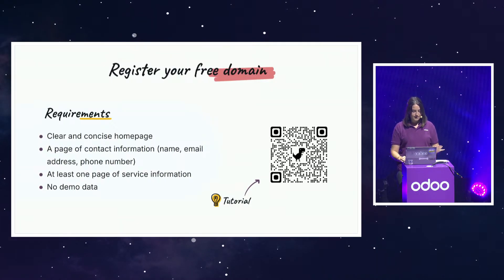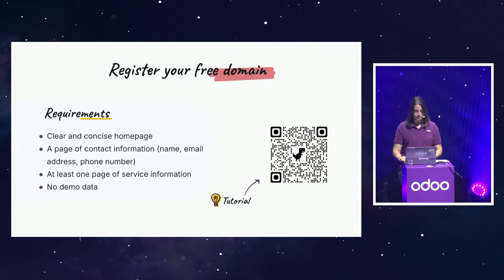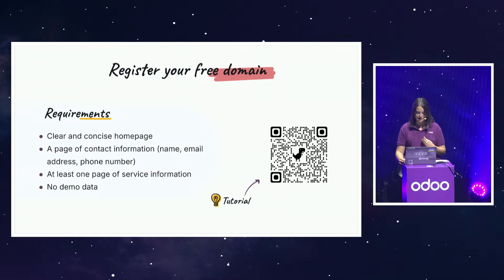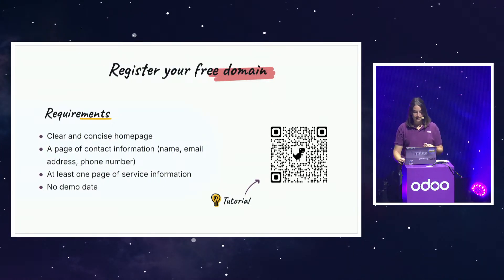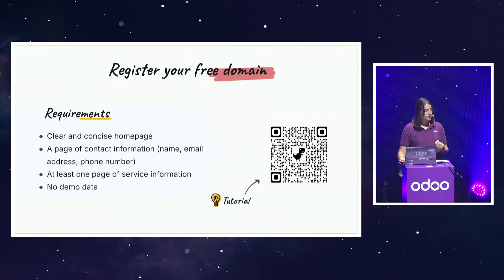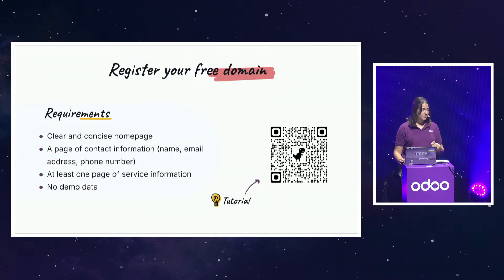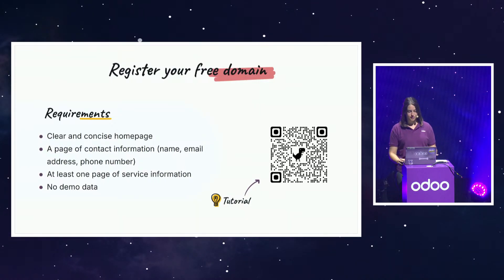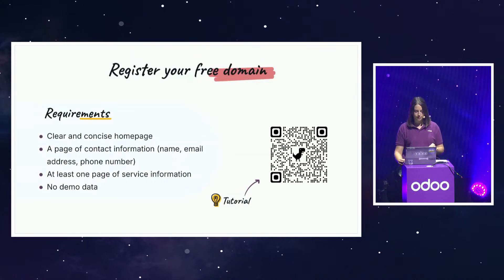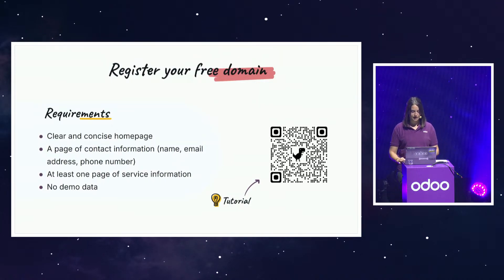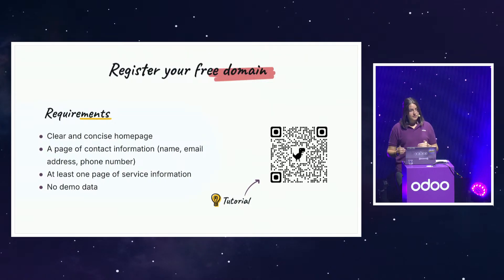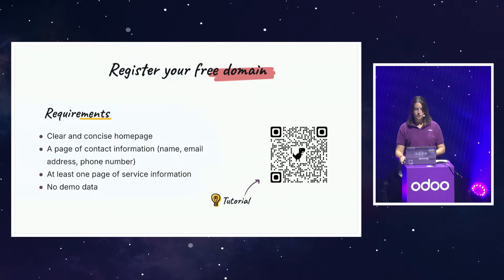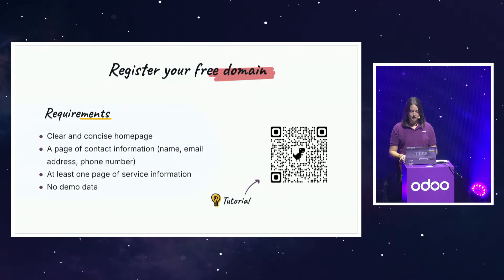You need to have at least one page of service information and no demo data. In addition to ensuring that the website complies with all policies, we also want to check that a fair effort has been made on the website to prove commitment for the project, as the domain offered is registered for a full year. To limit the list, we implemented a restriction: you can have a domain that will cost no more than 30 euros per year in the second year. If the domain you want is not available, you can go to gandhi.net to check availability and get an idea of the price for the second year.